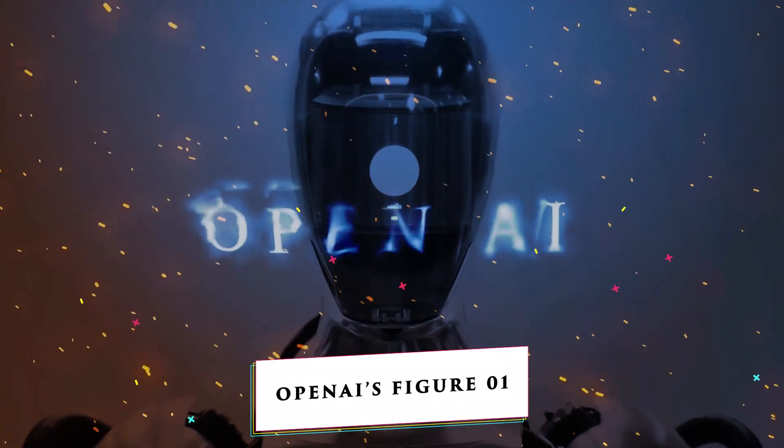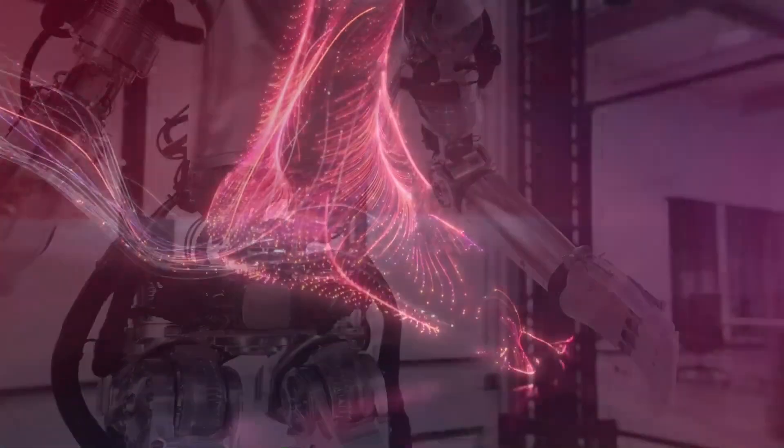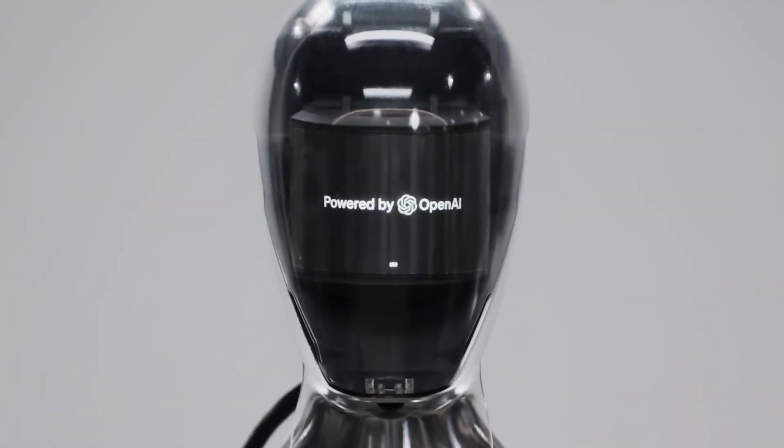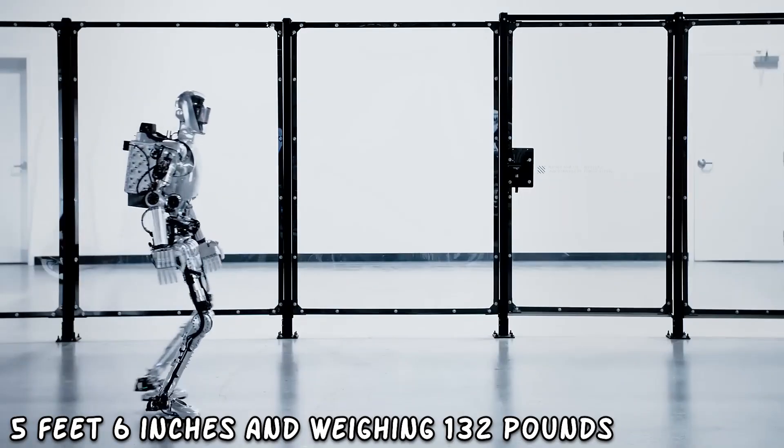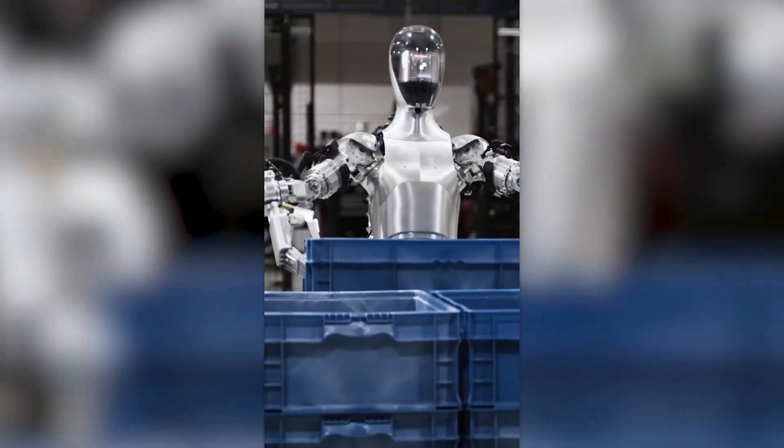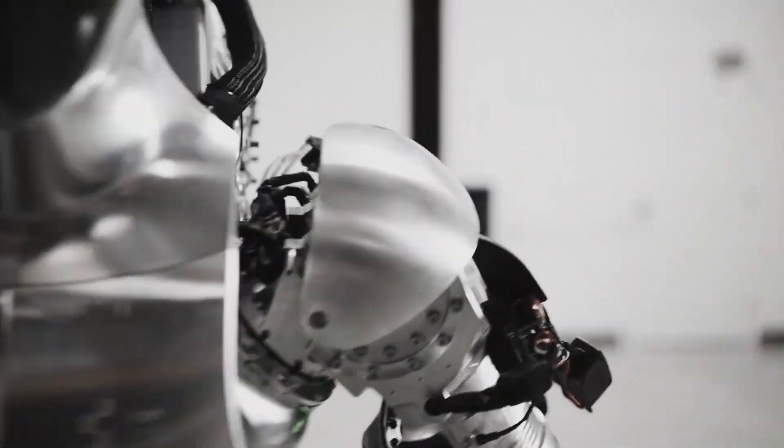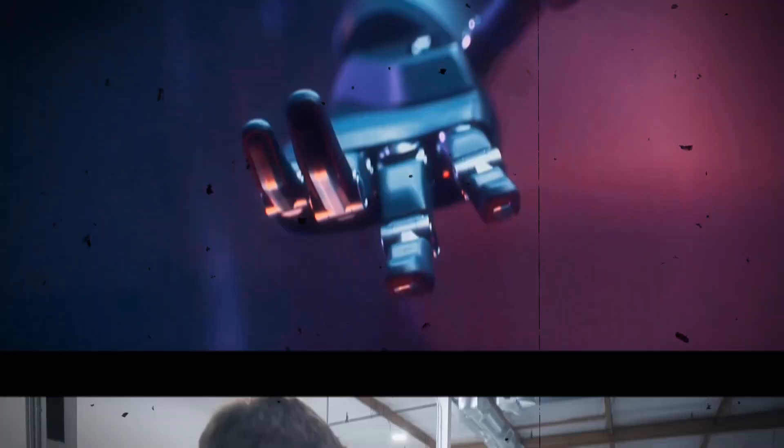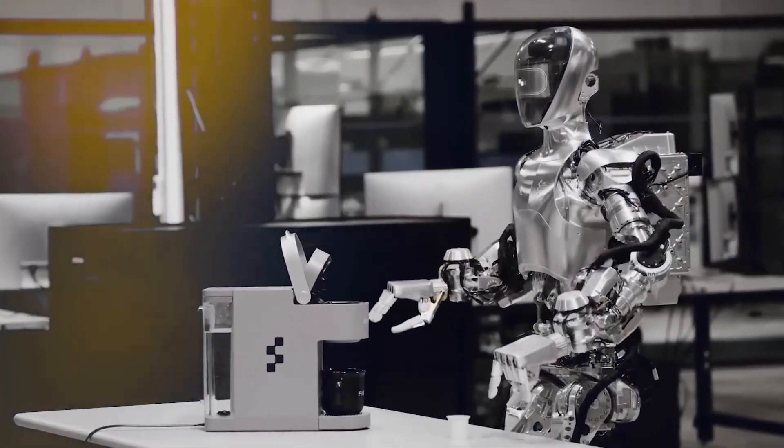OpenAI's Figure 01 stands as a testament to the remarkable progress made in the convergence of robotics and artificial intelligence, offering a glimpse into the transformative potential of artificial general intelligence. With its impressive stature of 5 feet 6 inches and weighing 132 pounds, and a robust build capable of lifting heavy objects, Figure 01 embodies the cutting edge advancements in engineering and AI that blur the lines between human and machine capabilities. This marvel of modern technology marks a significant milestone in the quest for AGI, showcasing the strides made towards creating machines that possess human-like cognitive abilities.